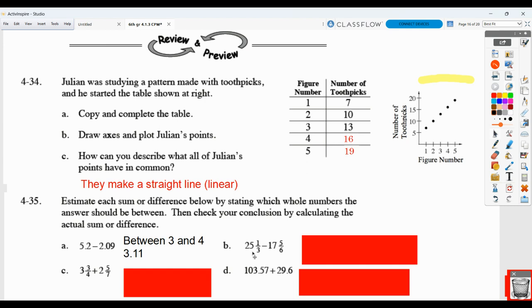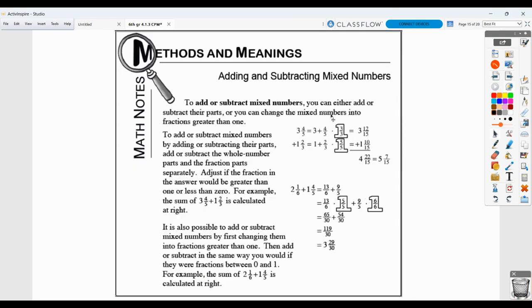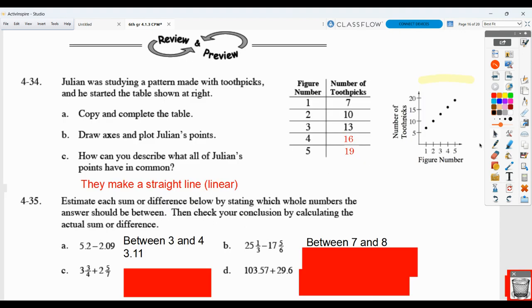For B, we could say this is about 25. This is about 18. So our estimate would be between 7 and 8. And then we're going to need to subtract these. And when we subtract them, we can use either of the methods that I talked about in the math notes. So you can go ahead and make the mixed numbers with common denominators and do the subtraction, or change them to fractions greater than 1 and do the subtraction.